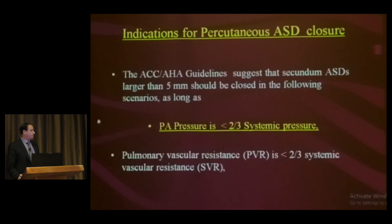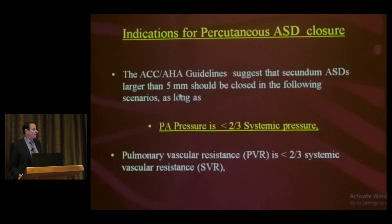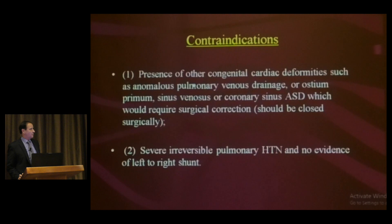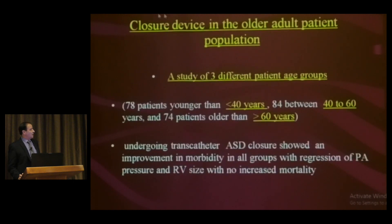ACC/AHA guidelines suggest that ASDs larger than 5 mm should be closed, provided that pulmonary artery pressure is less than two-thirds of systemic pressure. Contraindications include presence of other congenital abnormalities like sinus venosus or coronary sinus ASDs, and severe irreversible pulmonary hypertension.